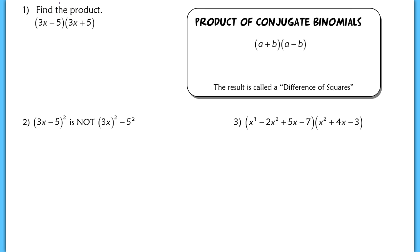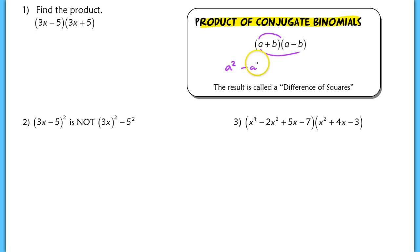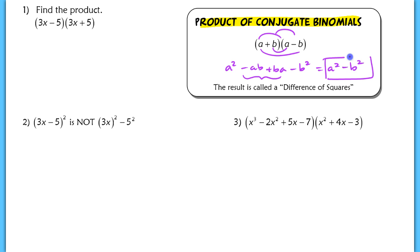Our first objective is multiplying conjugate binomials, and the reason we do this is because we always get a special product. So here I have a plus b, and the conjugate of a plus b is a minus b. If we FOIL these out, we get a squared, then negative ab, then plus ba, then negative b squared. The middle terms — negative ba and positive ba — cancel each other out, leaving us with a squared minus b squared. We call this a difference of squares.